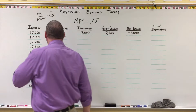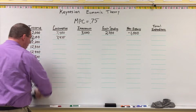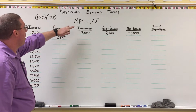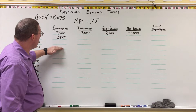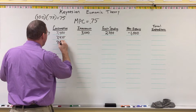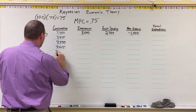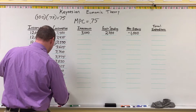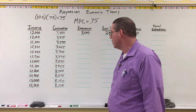Since income keeps going up by 100 at a time, and we multiply the change in income times the marginal propensity to consume (0.75), that equals 75. So every single line on the consumption column just goes up by 75. Starting from 7,475, we add 75 to get 7,550, then add 75 again to get 7,625, and so on all the way down.